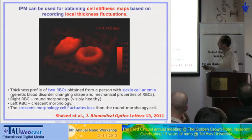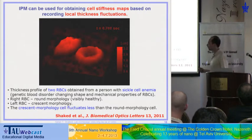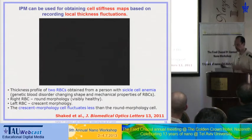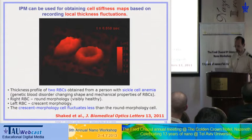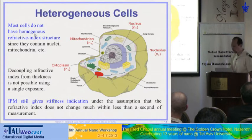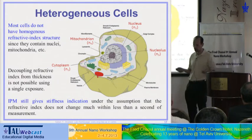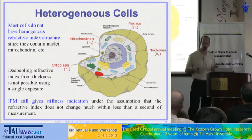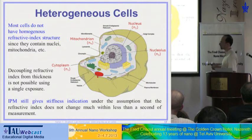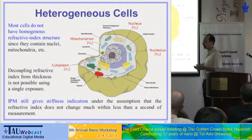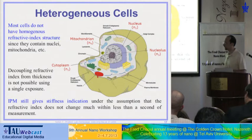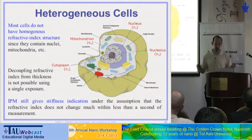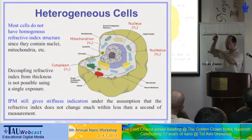A cell that looks completely normal may still be stiffer compared to a regular healthy cell, giving the clinician an additional indication for sickle cell anemia — and furthermore for sickle cell trait, which cannot be easily diagnosed by just looking at cells. We took this further to generalize for heterogeneous cells — cells that have a nucleus, mitochondria, and other organelles with different refractive indices. The nucleus has a high refractive index of about 1.42 and the cytoplasm might have about 1.36, and decoupling the refractive index and physical thickness can be difficult for dynamic cells.